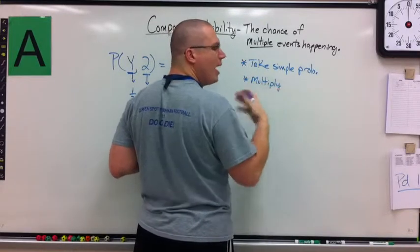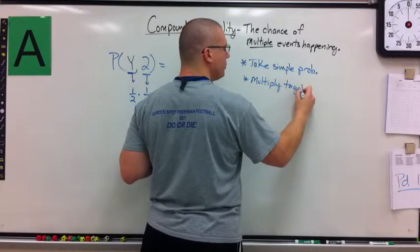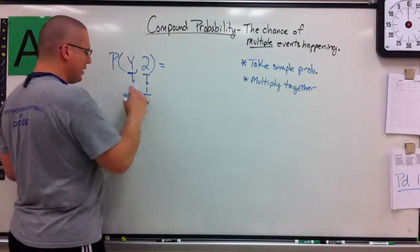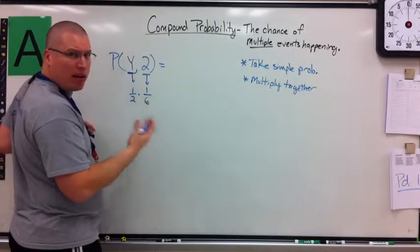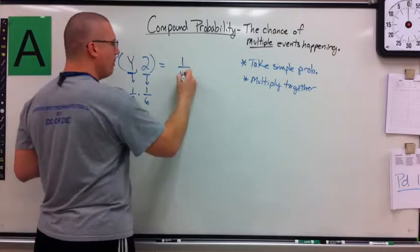And what this will do is give me my total probability of all of it. So let's check how this works. One-half times one-sixth. I cannot reduce diagonally at all. I would try that first, and I would get one up top, and I would get twelve on the bottom.